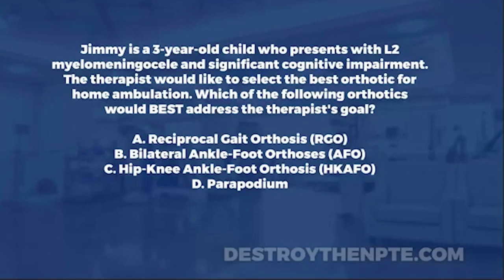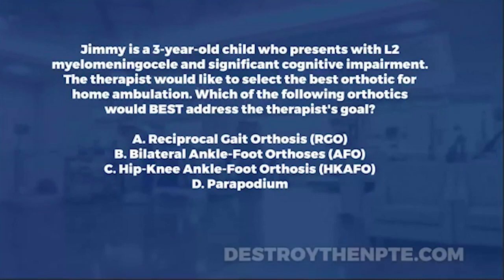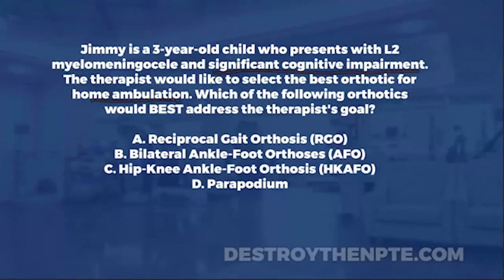The patient also has significant cognitive impairment — that's important too. It means our patient is going to have difficulties using specific types of orthotics, particularly if the child has to perform something requiring cognitive effort. We want to keep that in mind. The therapist would like to select the best orthotic for home ambulation, so the child needs to move around at home — that's the key goal.